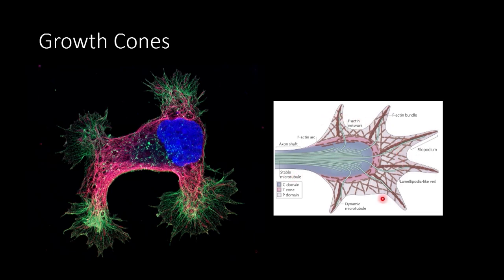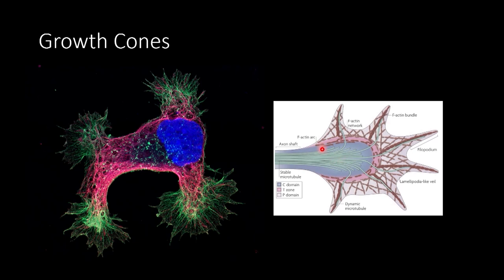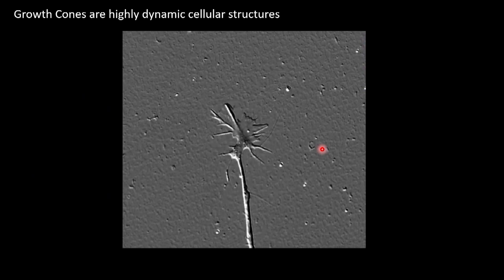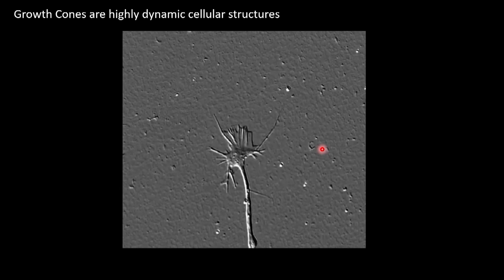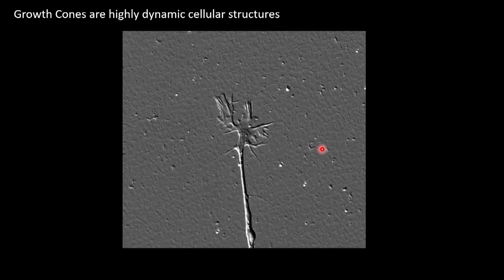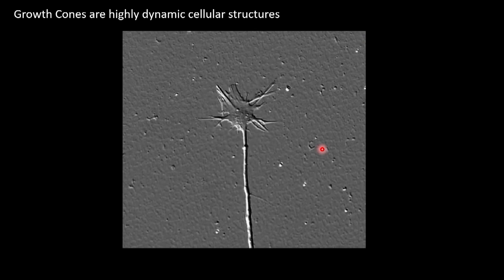Growth cones are divided into distinct regions. The outer region has filopodia, which is bundled actin, and a branched lamellipodia-like veil of branched actin. There's a transition zone where actin and some microtubules mix. The axonal process forms the central zone with organelles, microtubules, and translational machinery. Growth cones are highly dynamic — this is about a 30-minute time lapse of a neuron dynamically changing as filopodia extend and collapse.